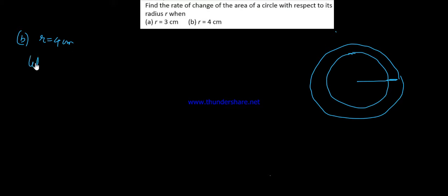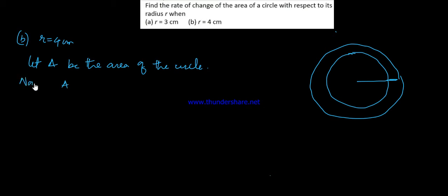Let A be the area of the circle. Area of the circle. Rate of change of area with respect to its radius — let A be the area of the circle.